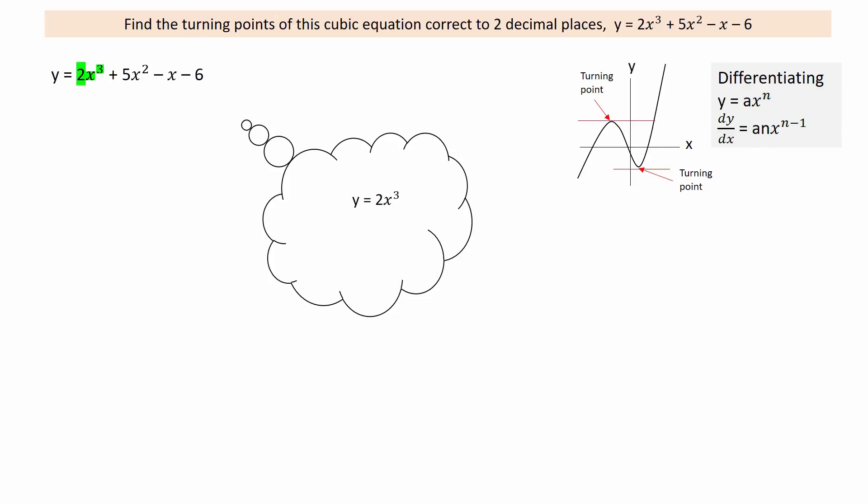Applying this rule to the terms in the cubic equation, starting with 2x cubed. 2 times 3 gives 6. And decreasing the power of x by one gives x squared. So the differentiation of the first term is 6x squared.